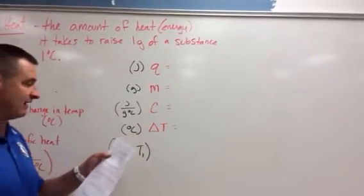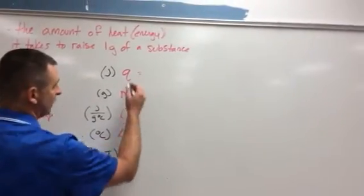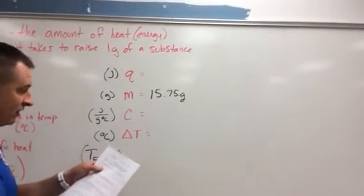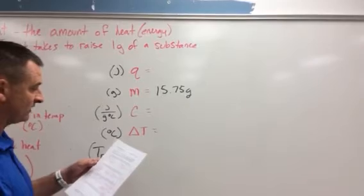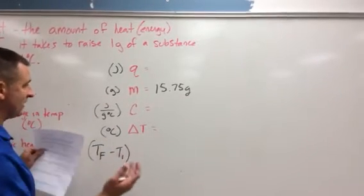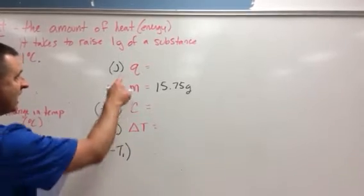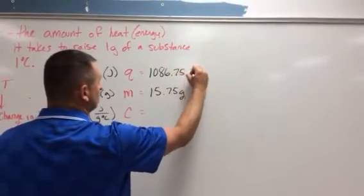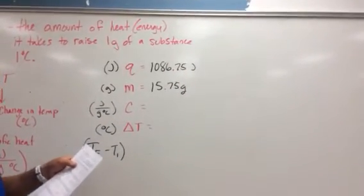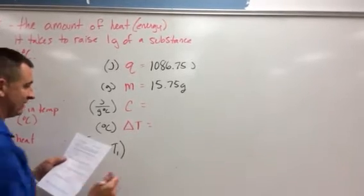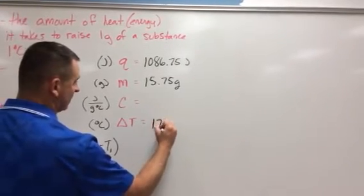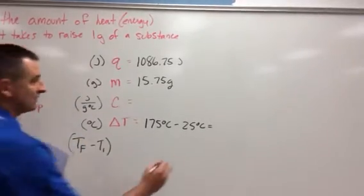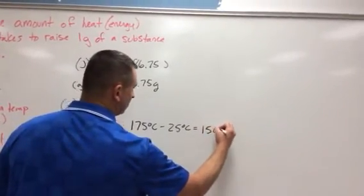In the first problem, it says a 15.75 gram piece of iron absorbs 1,086.75 joules of heat energy — so that goes for Q. And its temperature changes from 25 degrees Celsius to 175 degrees Celsius. So my final temperature is 175 degrees Celsius minus my initial temperature of 25 degrees Celsius, giving me a change in temperature of 150 degrees Celsius.